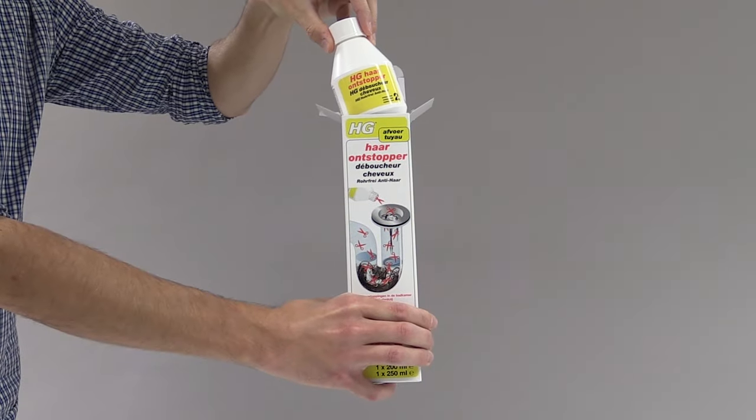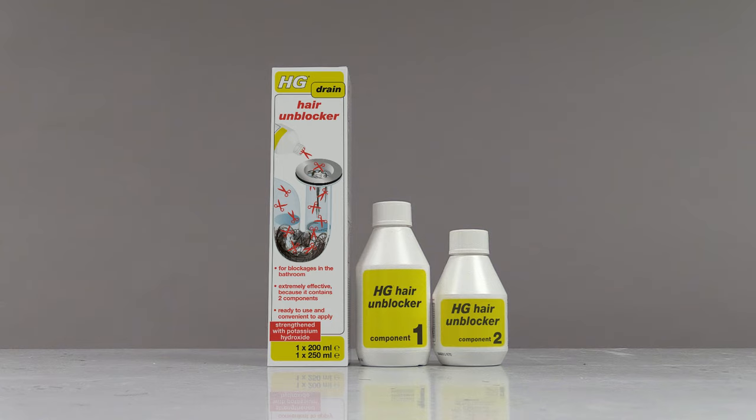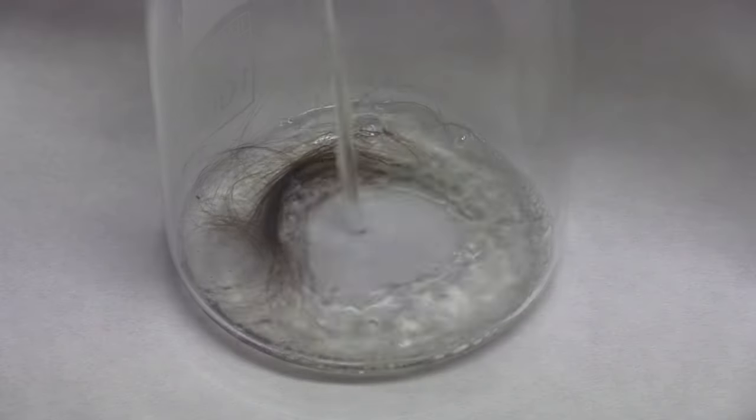HG Hair Unblocker is a ready-to-use product that works on the basis of two components, and is strengthened with potassium hydroxide.